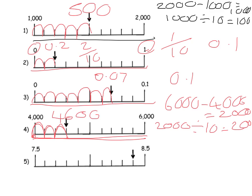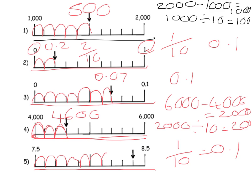Next one: 8.5 take away 7.5 equals 1, and there are 10 jumps. So 1 divided by 10 — we already know that's 0.1. So I'm going up in 0.1s: 7.5, 7.6, 7.7, 7.8, 7.9, 8.0, 8.1, 8.2, 8.3, 8.4.